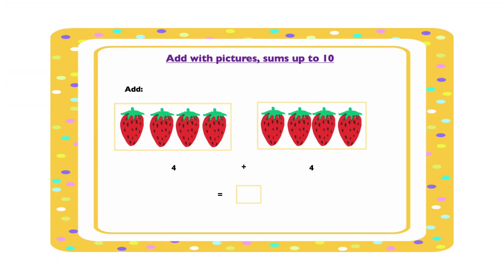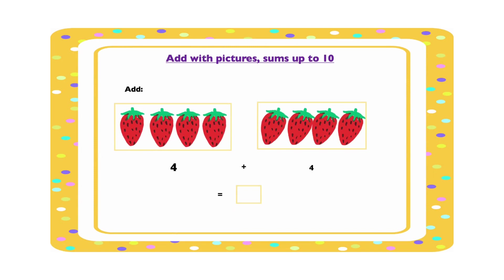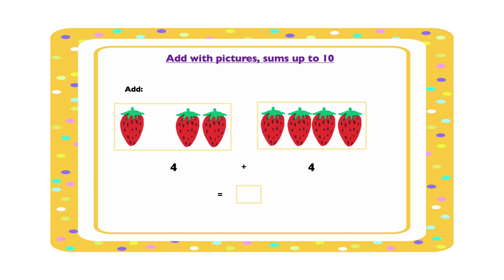In this picture we have two groups of strawberries. We have four strawberries in this group and another four in the second group. To find out how many there are altogether we need to add the two groups together. Let's do that: one, two, three, four, five, six, seven, eight. So the sum of four and four is eight.